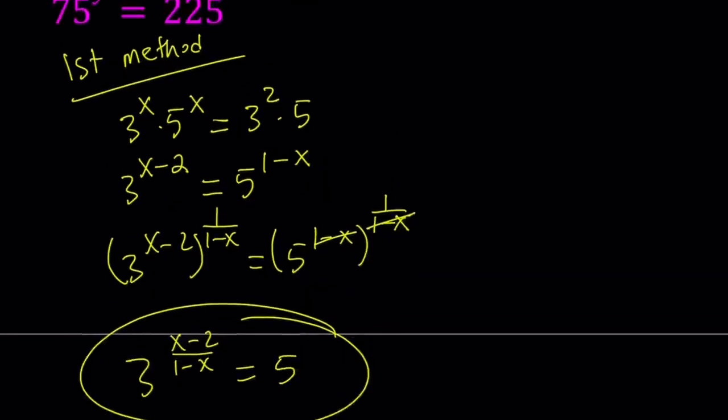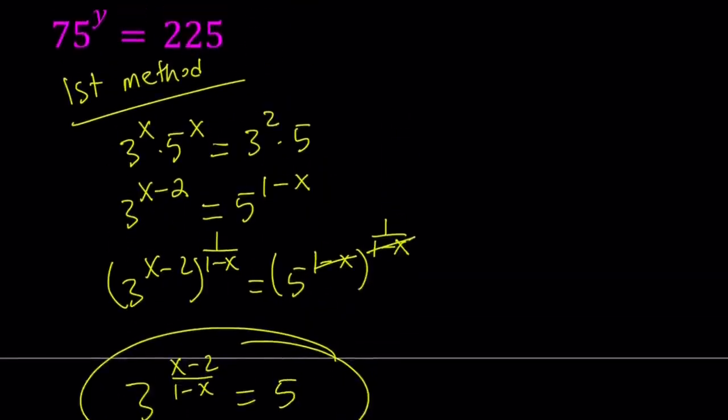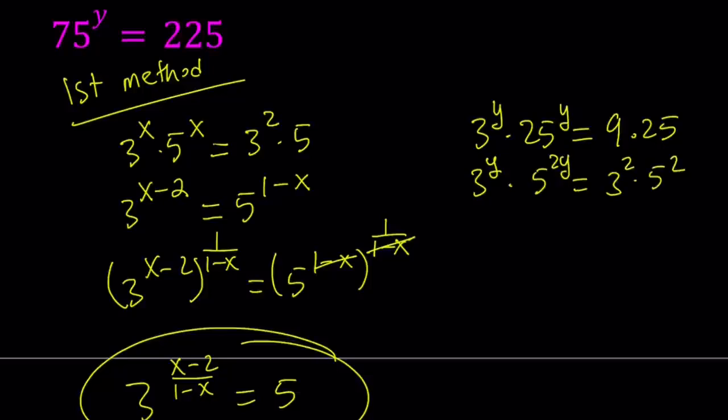So we're going to do something similar with the other number. 75 to the power y. So 75 can be written as 3 times 25. So it's going to be 3 to the power y times 25 to the power y. And 225 can be written as 9 times 25 or 3 times 5 quantity squared. Let me write it as 9 times 25 first. And then I'm going to use the powers. So I can turn this into 3 to the y times 5 to the power 2y. This becomes 3 to the second and this becomes 5 to the second.